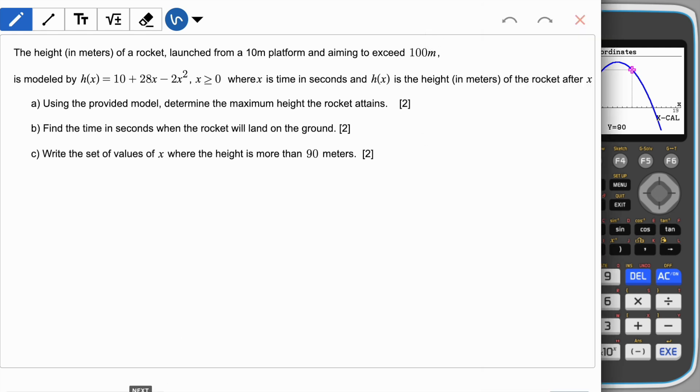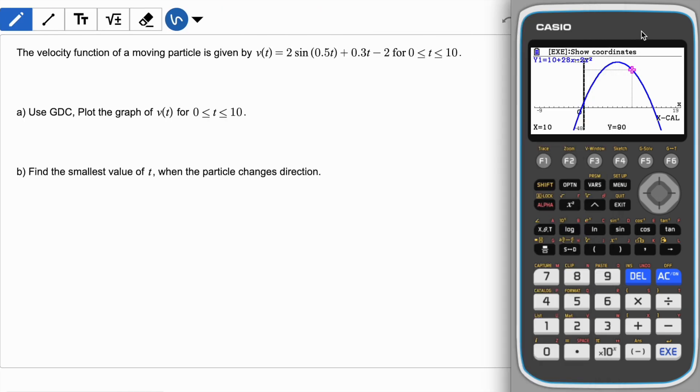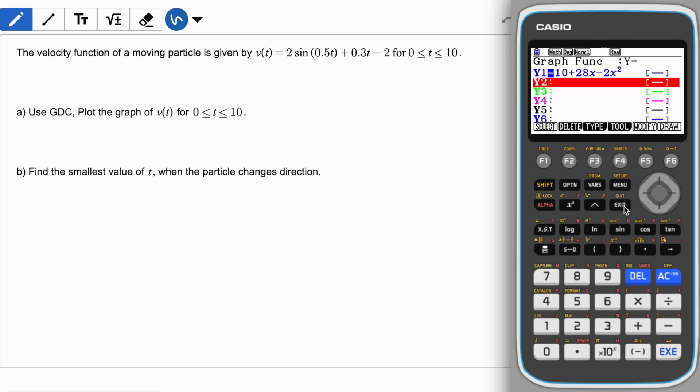Let me show you one more very quickly. Here I have a velocity function of a moving particle given by 2 sine 0.5t plus 0.3t minus 2 from 0 to 10. Let's go back and erase whatever you have, delete it and pause this video and enter this function. Here you go, I have entered my function and I can click on draw.